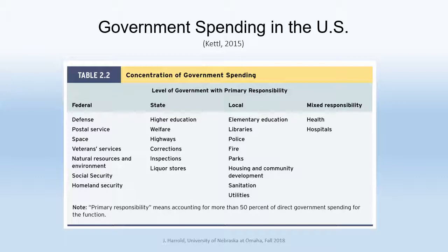If you look at this functionally — taking budget shares as an indicator of interest — states are interested in K-12 education, higher education, welfare, highways, corrections, inspections, and liquor stores. But where most state budgets consume most of their revenue is in health care — the state share of Medicaid — and education, whether higher education or the state share of K-12 education.